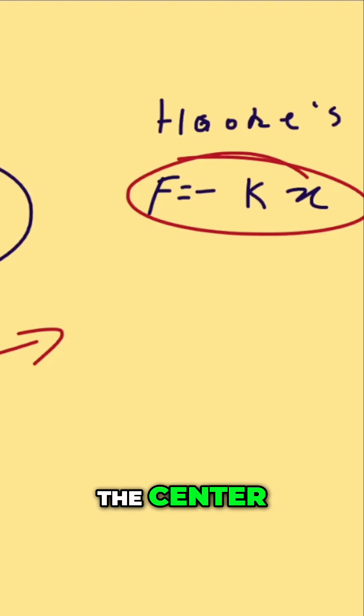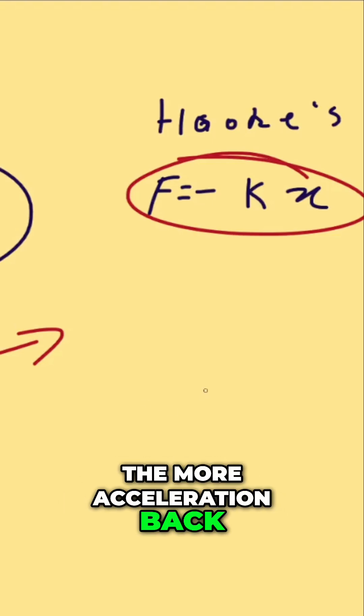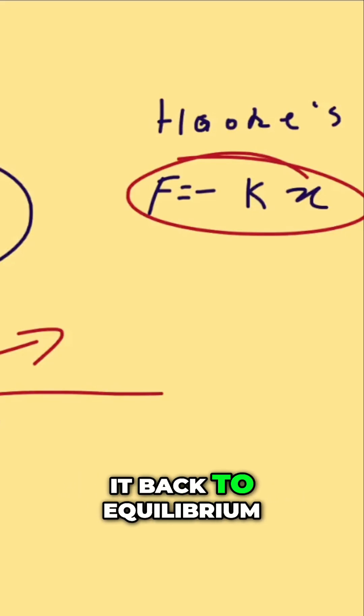So the further from the center, the more acceleration back toward the center. This is the mathematical evidence that the harder you move your mass, the harder the spring will try to restore it back to equilibrium.